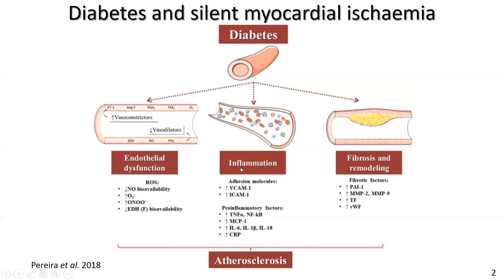Diabetes causes inflammation of blood vessels. Some of the pro-inflammatory markers include tissue necrosis factor, interleukins, and C-reactive protein. And finally, fibrosis and remodeling, which is familiar in the atherosclerotic process. Combined, endothelial damage and dysfunction, chronic inflammation, and fibrosis and remodeling are all pro-atherogenic, leading to myocardial ischemia.